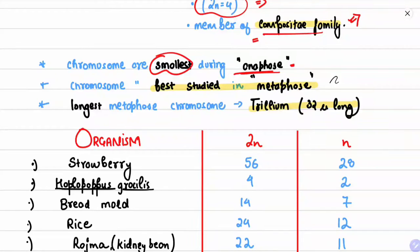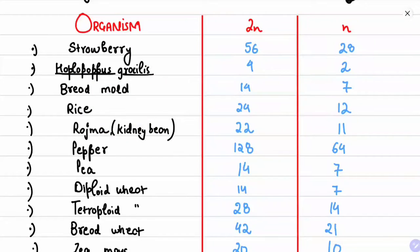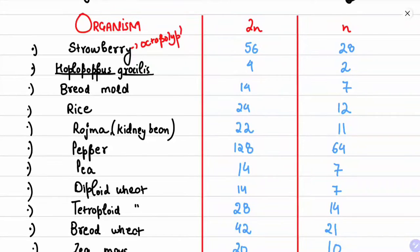The longest metaphase chromosome is found in Trillium, measuring 32 microns long. Now here is a list of important organisms and their chromosome numbers. Strawberry has 2n = 56, because strawberry is an octoploid — 2n = 8x. This has been asked in various examinations.